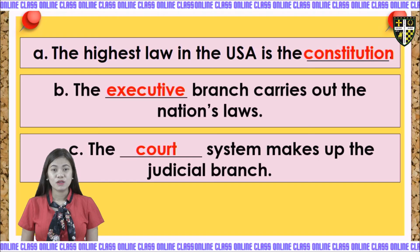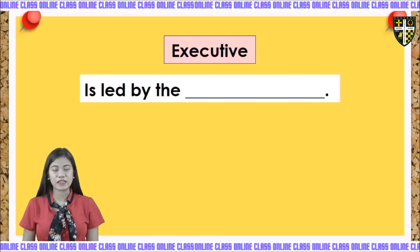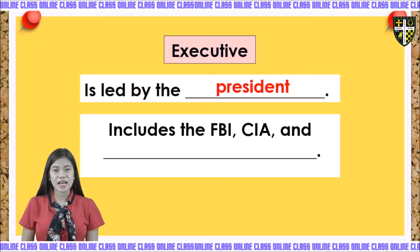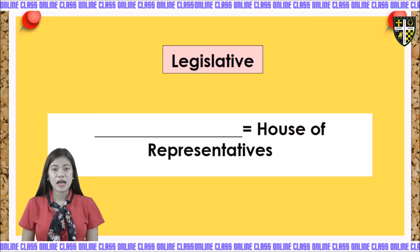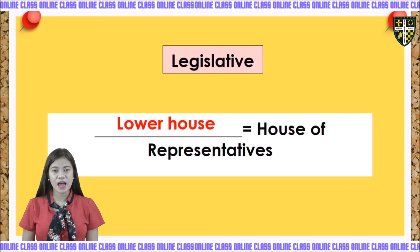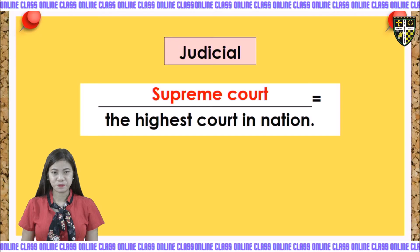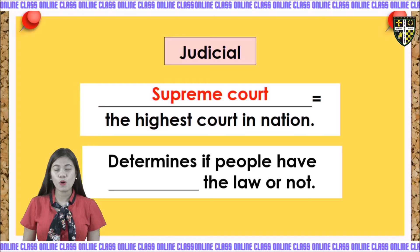Now in question number six, let us complete the outline. Under executive branch: led by the blank — the president. Includes the FBI, CIA, and blank — the answer is Department of Defense. Under legislative: blank equals house of representatives — the answer is lower house. Under judicial: blank equals the highest court in the nation — the answer is Supreme Court. Determines if people have blanked the law or not — the answer is broken.